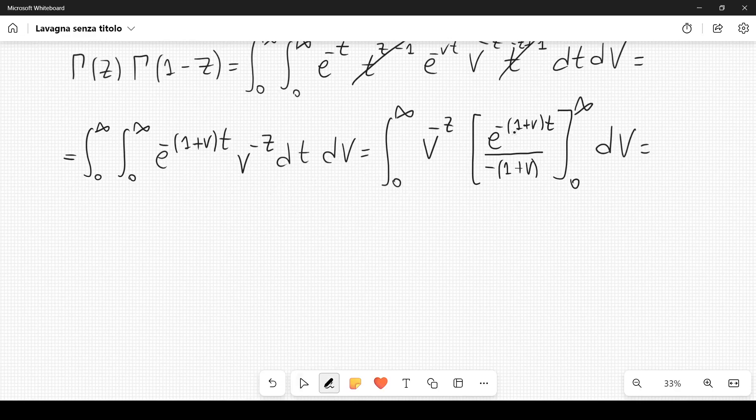This exponential will go to 0 as t goes to infinity, because 1 plus v is positive, because v is a variable that goes from 0 to infinity, so definitely 1 plus v will be positive. Therefore we can rewrite this as integral from 0 to infinity, v to the minus z, divided by 1 plus v, dv.